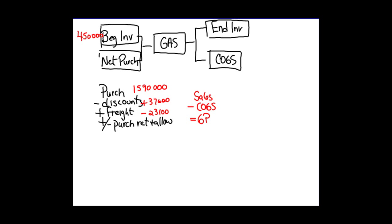That can be done in any order. Adding those together gives us our net purchases of $1,604,500. During the past several years, the store's gross profit on sales has averaged 30%, so the gross profit percentage is 30%. The problem also states to assume $2,000,000 of sales during the first quarter.